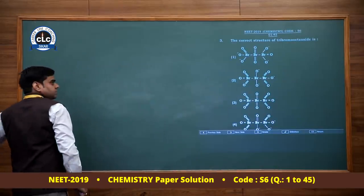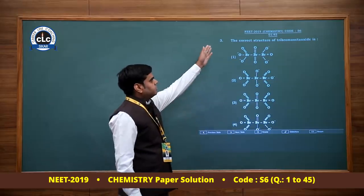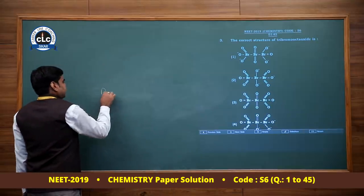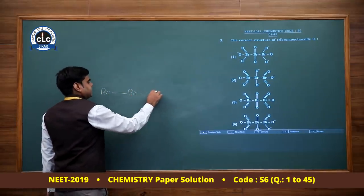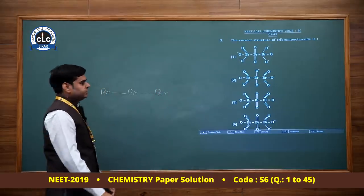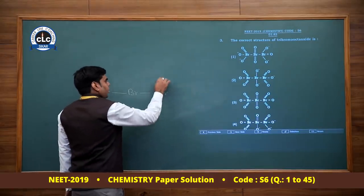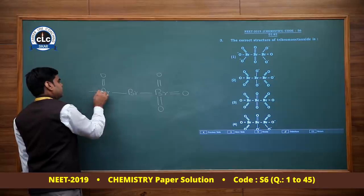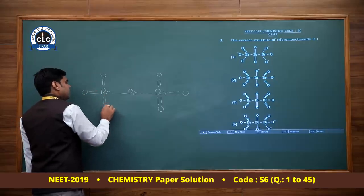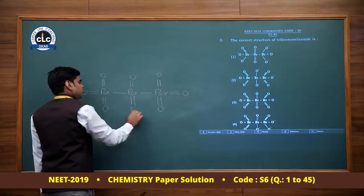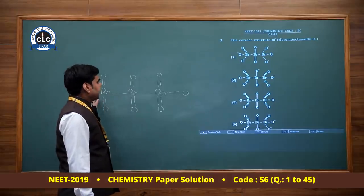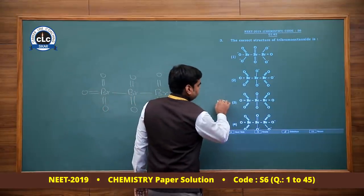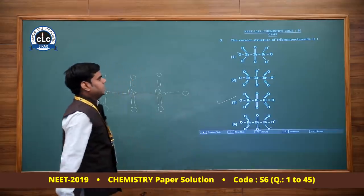Question number 3: the correct structure of Br3O8 (tribromine octoxide). The structure has 3 bromine atoms connected with sigma bonds. Terminal bromine has 3 double bonds with oxygen; middle bromine has 2 double bonds. This is the correct structure of Br3O8. Third option is the answer.